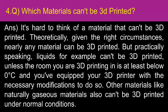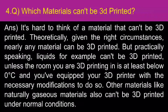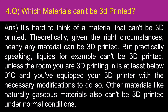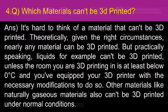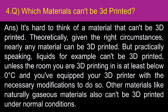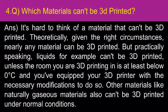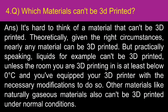Which materials can't be 3D printed? It's hard to think of a material that can't be 3D printed. Periodically, given the right circumstances, nearly any material can be 3D printed. But practically speaking, liquids, for example, can't be 3D printed unless the room is at least below 0 degrees Celsius and you have equipped your 3D printer with the necessary modifications to do so. Other materials like naturally gaseous materials also can't be 3D printed under normal conditions.